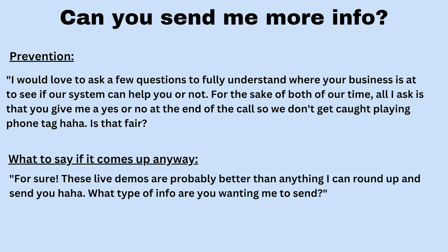The eighth objection is: can you send me more info? I absolutely hate this objection — it's just a cop out. People are trying to get away from you when you literally just gave them all the info on the sales pitch. You can prevent this at the beginning of the call by saying: I would love to ask you a few questions to fully understand where your business is at, to see if our system can help you or not. Saying 'can help you or not' disarms them — it shows you're truly in their best interest and won't sell them something they don't need. Then say: for the sake of both of our time, all I ask is you give me a yes or no answer at the end of our call so we don't get caught up playing phone tag. Is that fair?